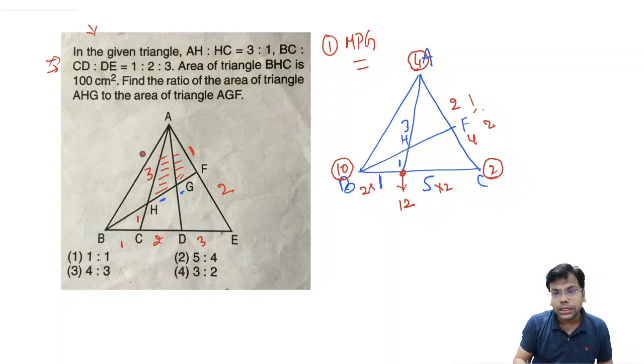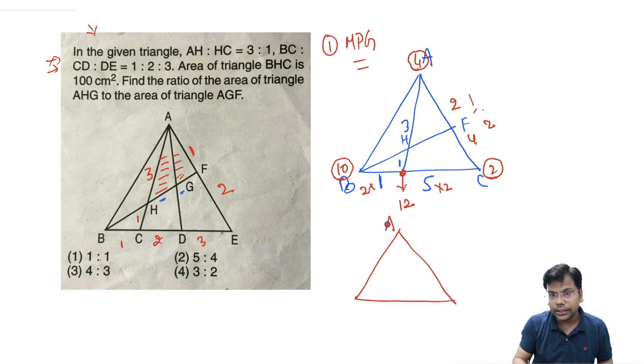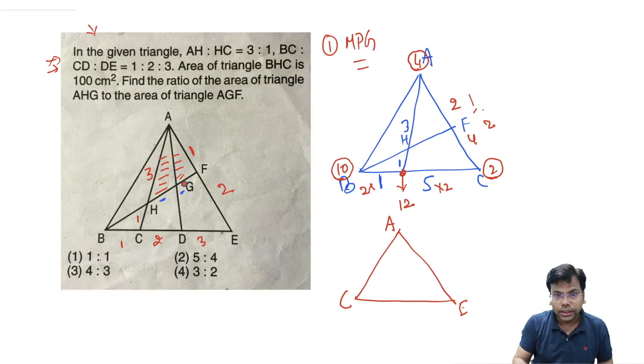Now we need to apply the mass point geometry in triangle ACE. So apply the mass point geometry in triangle A, C, E, in which we have H vertex. This one is given 3 is to 1, this one is 1 is to 2.